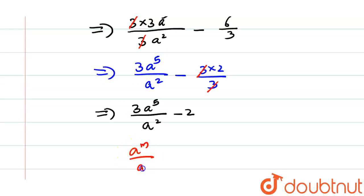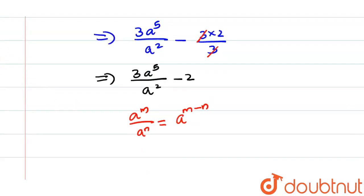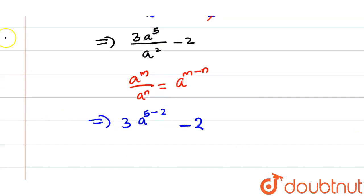Now let's apply that over here. So this will be equal to 3a raise to 5 minus 2 minus 2. So this will be 3a raise to 5 minus 2 will be 3 minus 2.